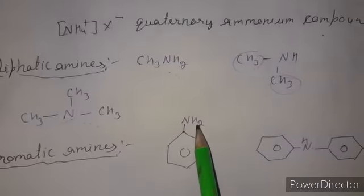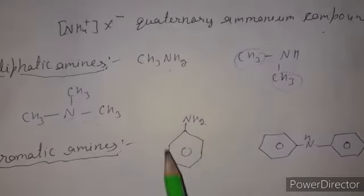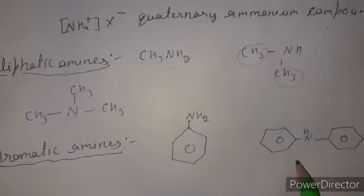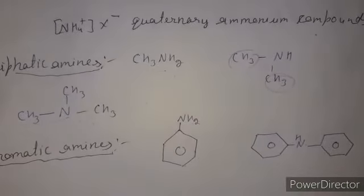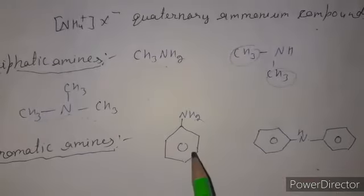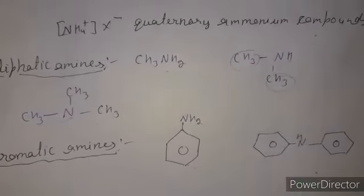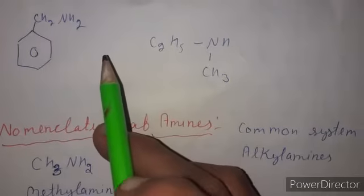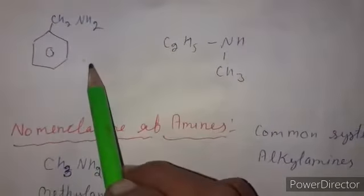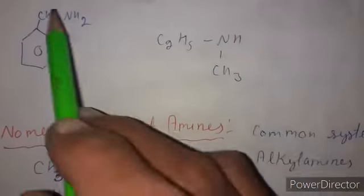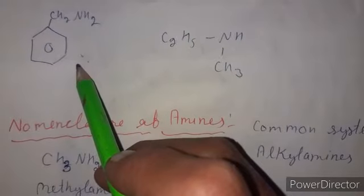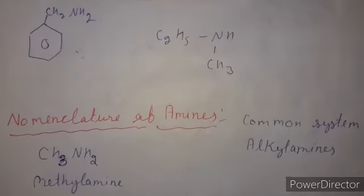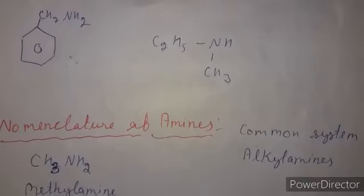Aromatic amines are those in which the nitrogen atom is directly bonded to a benzene ring. These are called aryl amines. If one phenyl group is attached it is primary, if two it is secondary, and if three it is tertiary — giving aniline, diphenylamine, and triphenylamine. The second type are aryl-alkyl amines or side-chain substituted amines, such as benzylamine (primary), dibenzylamine (secondary), and tribenzylamine (tertiary).